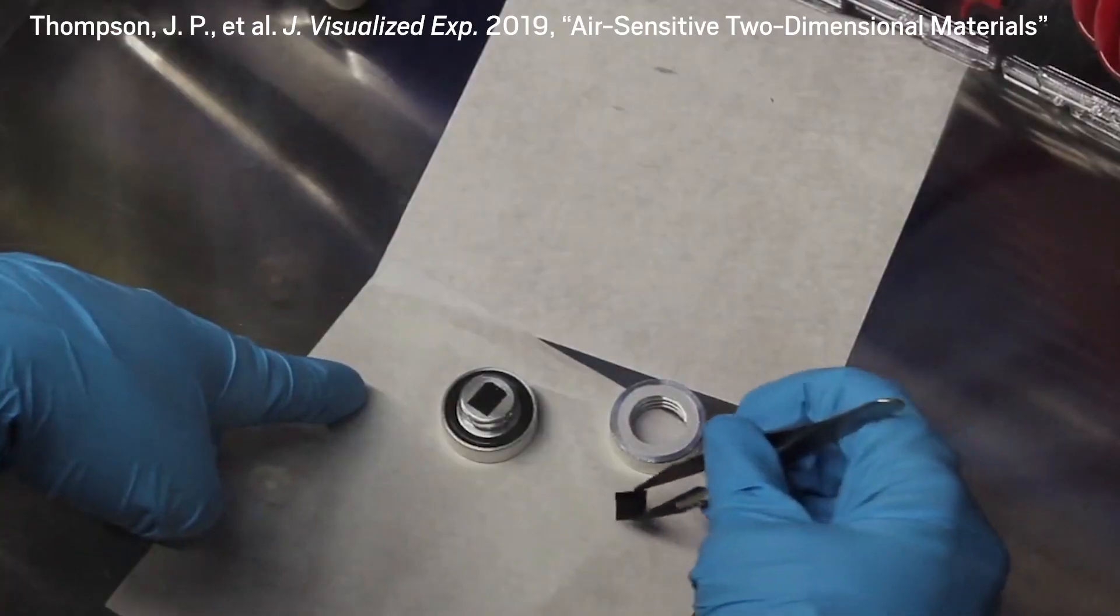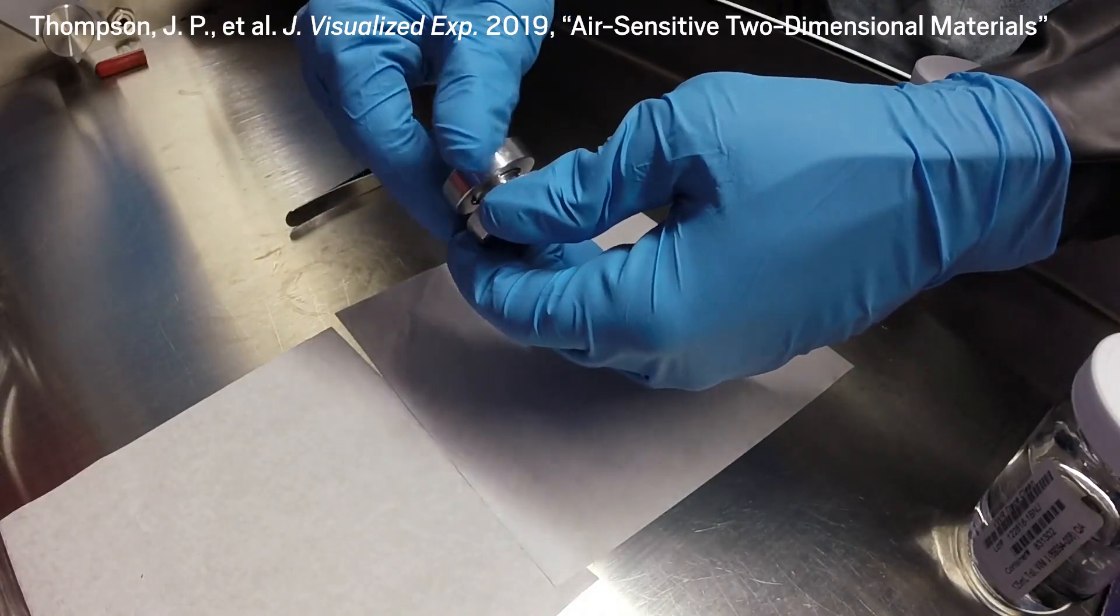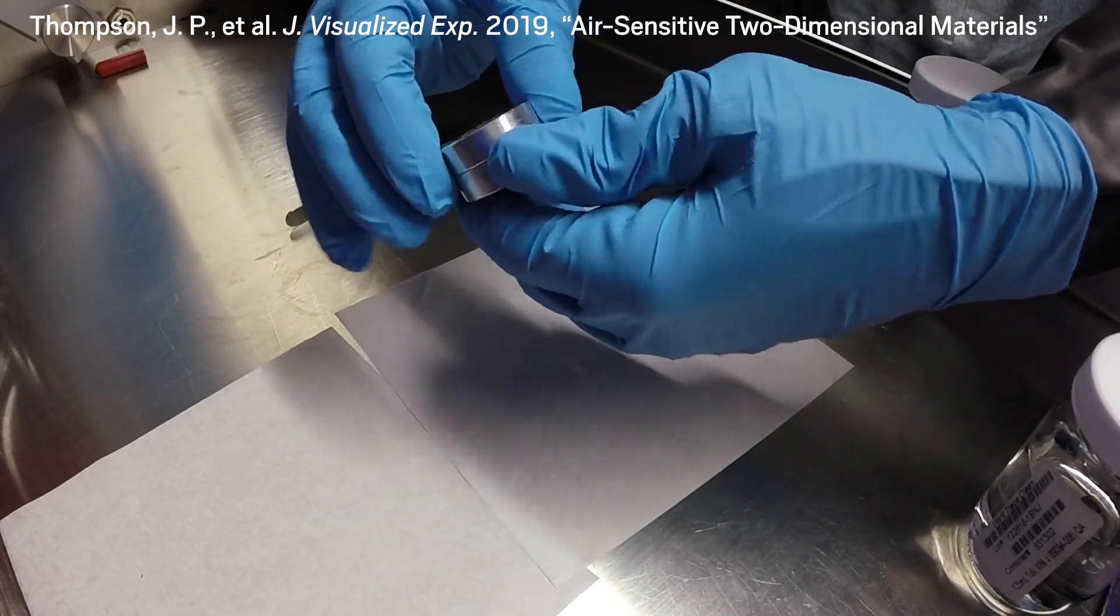While working inside a glove box, researchers place a sample into the cell. Then they screw the two halves of the cell together, creating a seal that will maintain an inert environment even when removed from the glove box.